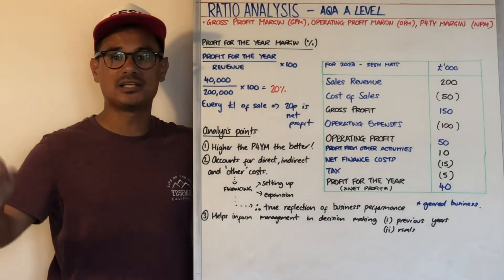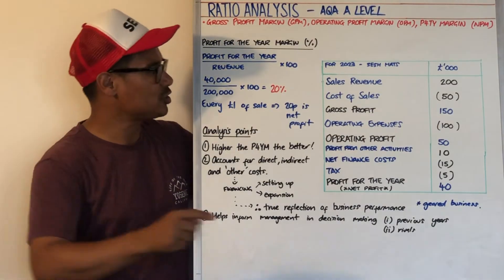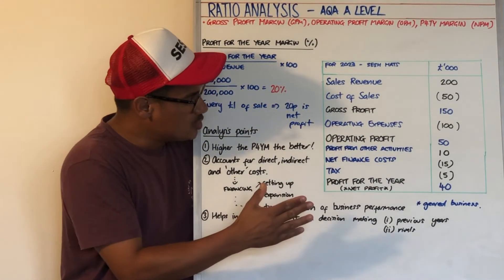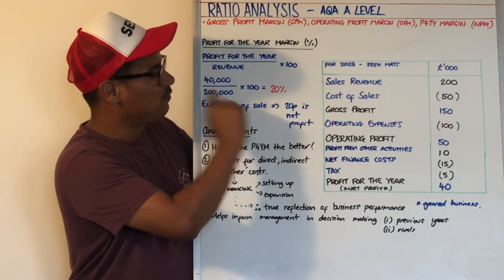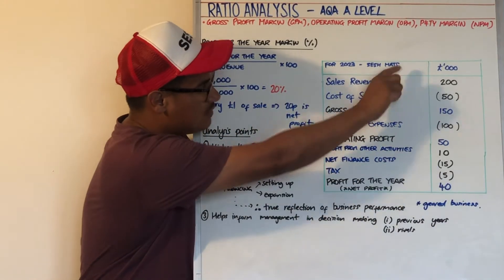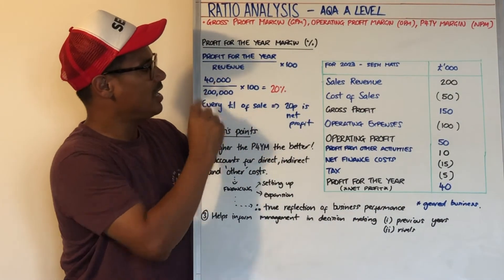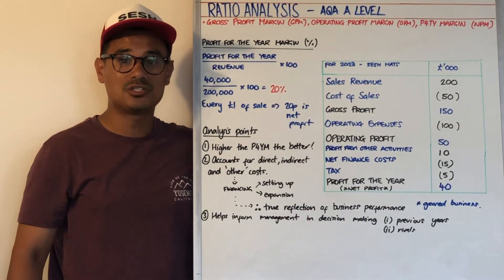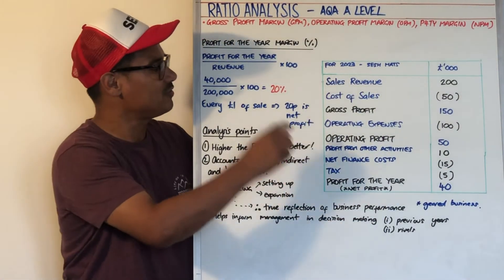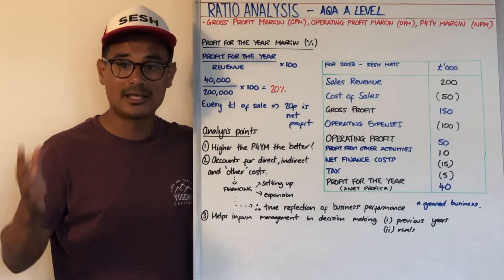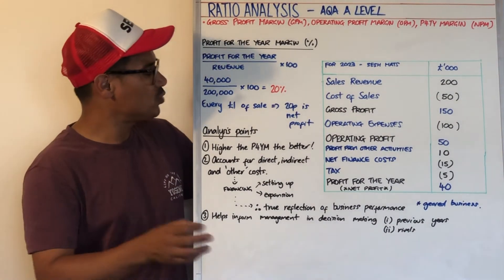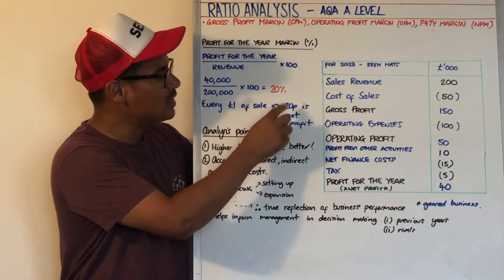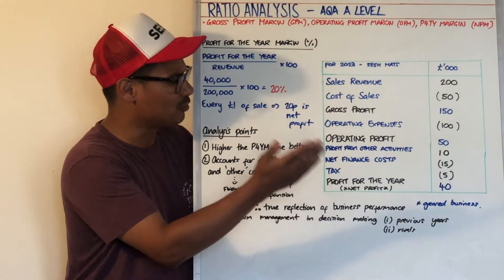The profit for the year, expressed as a percentage, is calculated by plugging in the numbers. Profit for the year is £40,000 — you can see it on the income statement — divided by £200,000 revenue, times by 100, giving 20%. That means for every £1 of sale, 20 pence is net profit, or profit for the year.